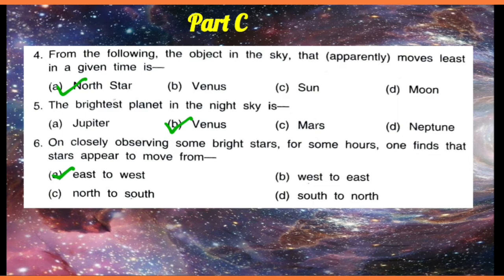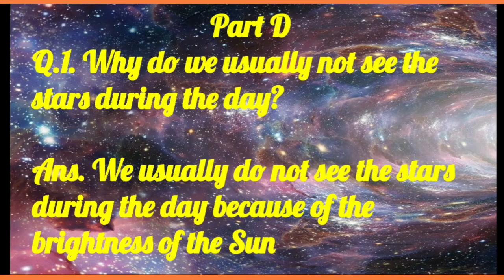The movement of stars appears east to west to us, because the Earth rotates on its axis from west to east. So we will now do part D.